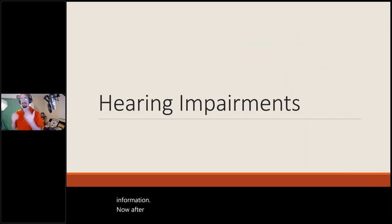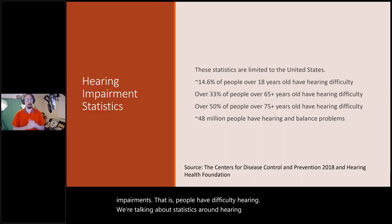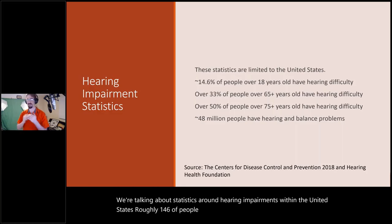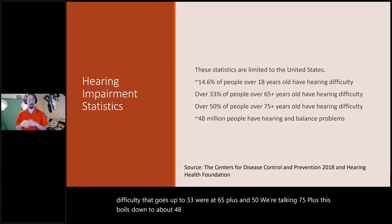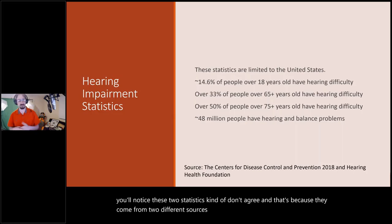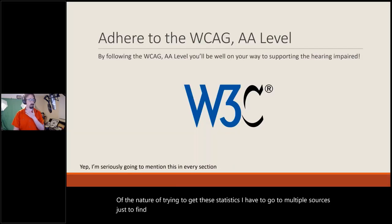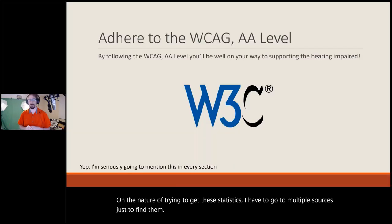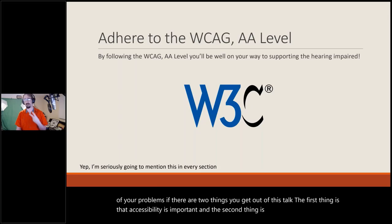After visual impairments, the next one is hearing impairments — people who have difficulty hearing. Roughly 14.6% of people over 18 have some level of hearing difficulty, rising to 33% at age 65 and 50% at age 75. This amounts to about 48 million people with hearing and balance problems. Again, adhere to the WCAG AA level. Accessibility is important and WCAG AA should be your minimum bar to hit.